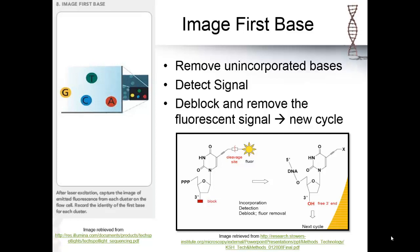After that, the block on the newly added base's 3' end of the sugar is removed. This way a new base can be added by the polymerase in the next cycle. The fluorescence is also removed so that only the new base's fluorescence is detected in the new cycle.